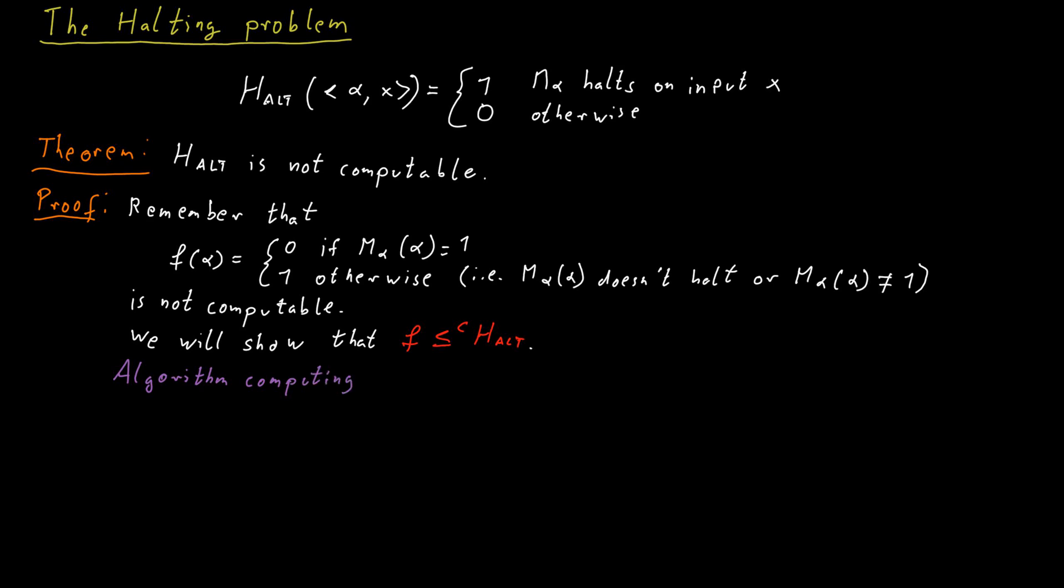So here's how that algorithm would work. We compute F(alpha) using an oracle for HALT. The first step of the algorithm checks whether HALT(alpha, alpha) is true or not. So we determine what the value of HALT(alpha, alpha) is. We want to know whether the machine M_alpha halts on input alpha.